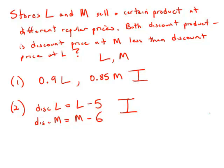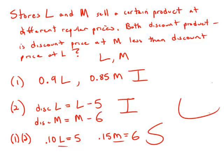Well because both statements are insufficient, now we will combine the two statements. When we combine them, what we find out is that the discounted price of L is 10% less than the regular price and that 10% of L equals a $5 deduction. So we could solve for L. Similarly, when we take a 15% deduction from M, that results in a $6 deduction. So we could solve for the value of L, solve for the value of M, and then putting all the information together we could find the discount prices and we could find out which discount price was less. So when both statements are put together we have sufficient information to answer the question, and the answer is C.